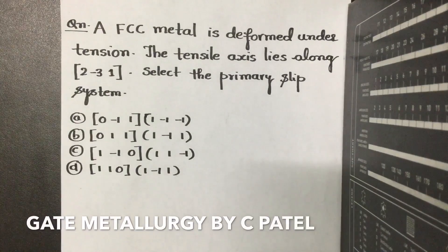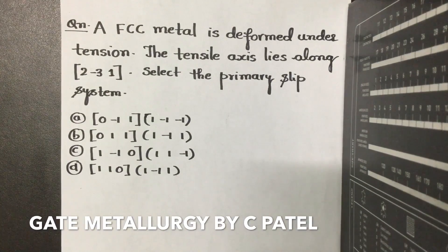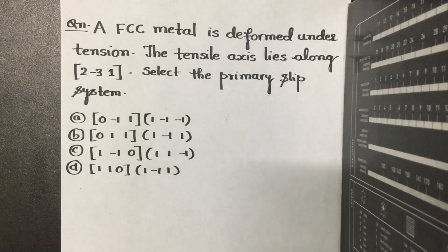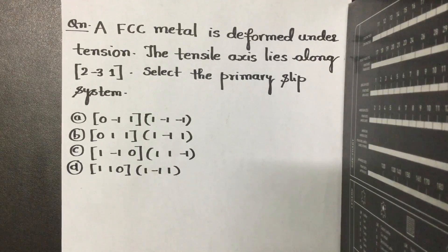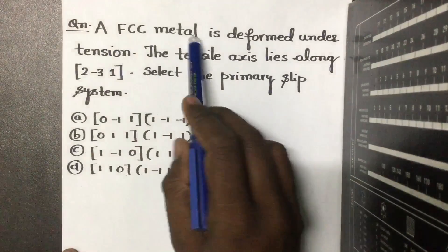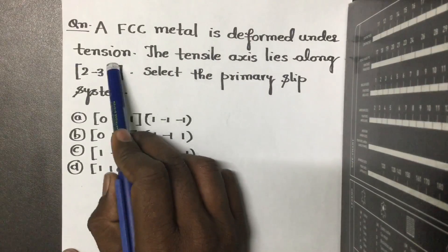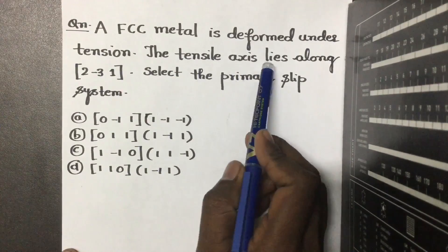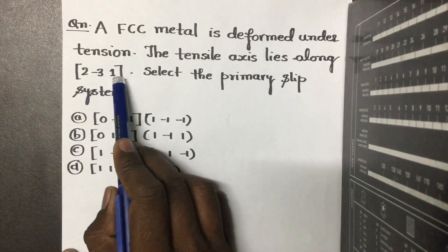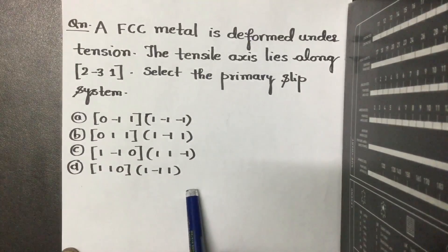Hello friends, good morning. I'm C. Patel and I'm back with a new question. An FCC metal is deformed under tension; the tensile axis lies along [2̄ 3 1]. We need to select the primary slip system.